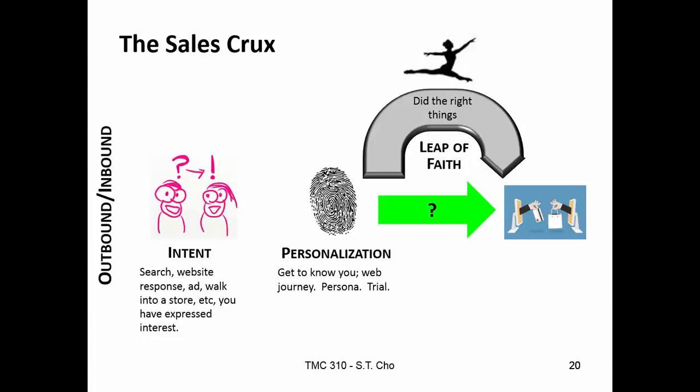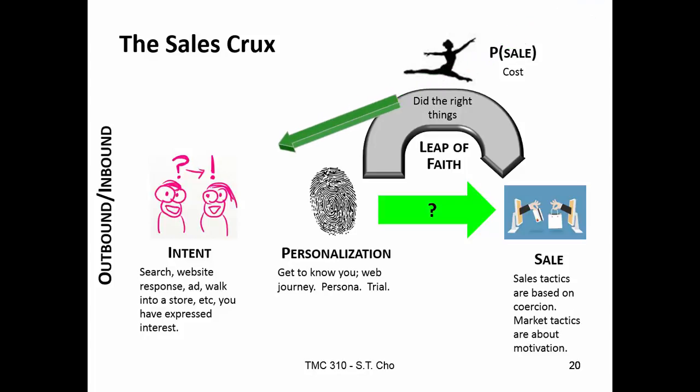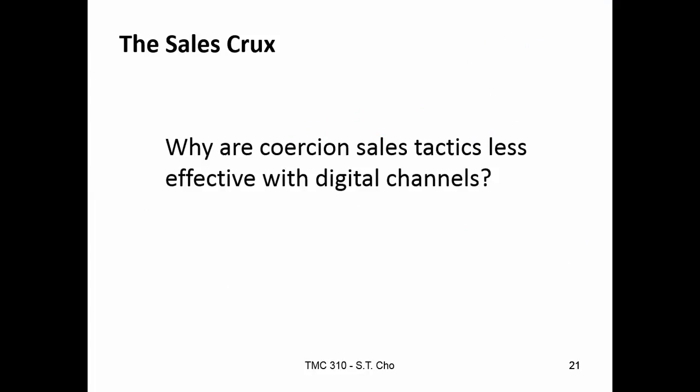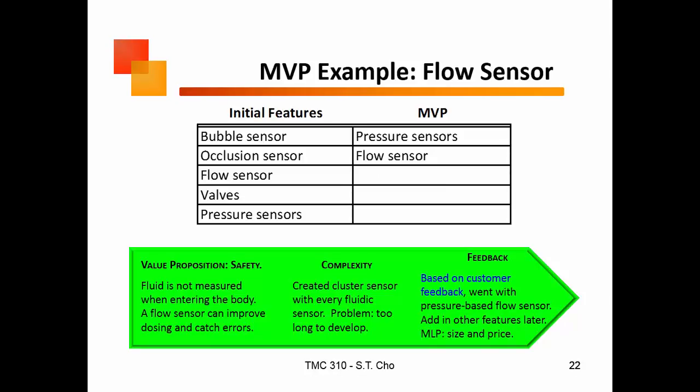Today in marketing, it's not about heavy-handed sales tactics. Since you already showed intent when you do inbound marketing, now it's about doing the right things to make you feel comfortable with the product, to fall in love with it — and that gives me a probability of sell. Marketing tactics are about motivating you to buy my product; sales tactics are about coercion. That's why they are less effective on digital channels — we live in an age where we have so many choices and we want to feel comfortable before we buy something.